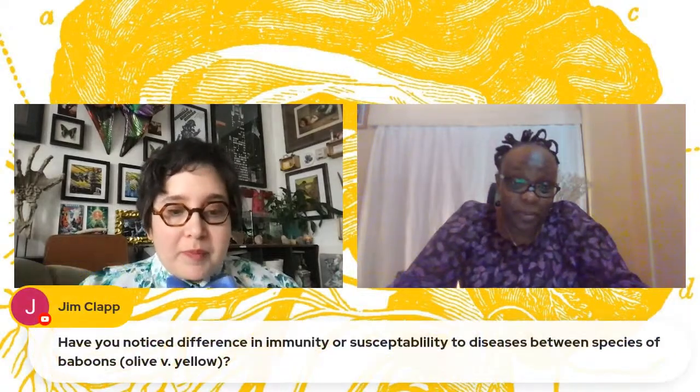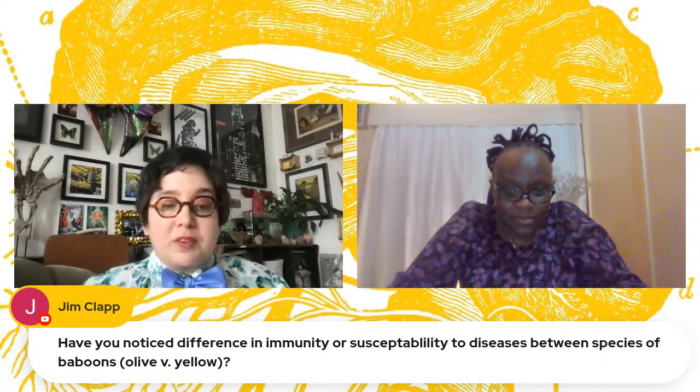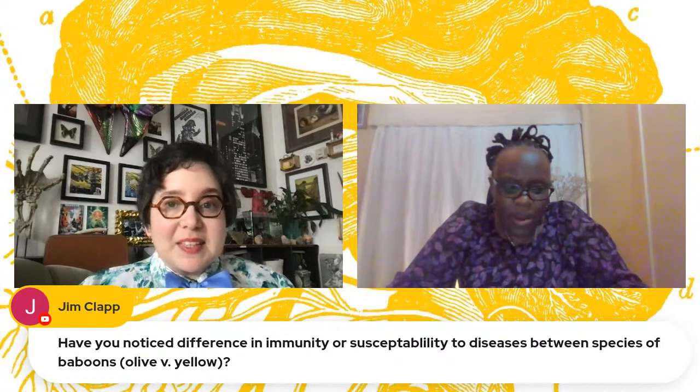Jim asks: have you noticed differences in immunity or susceptibility to disease between species of baboons? From the dataset we have, I did not factor that in when doing the analysis. The Amboseli baboons have a lot of admixture, so it's very hard to find a pure yellow or pure olive. There is work done by Jenny and others looking at hybridity scores and how hybridity affects different factors in baboons. So there may be a difference, but from this study I can't confidently answer that question.